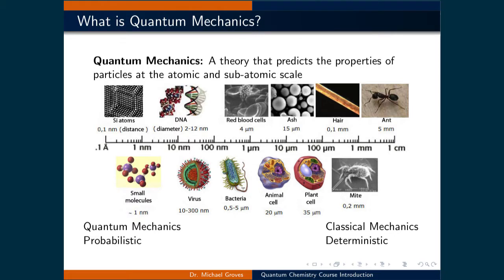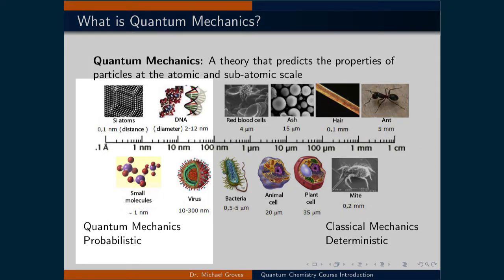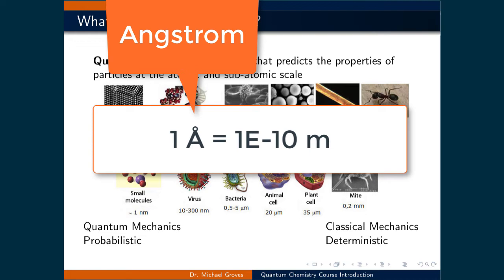In the center of the slide, there is an image on a logarithmic scale that shows what things we would expect to see at various length scales. Quantum mechanics best describes things on the left side of the scale, things that are nanometers in length or less. For example, we will frequently use the length scale, the angstrom, which is 1 times 10 to the power of negative 10 meters in this course.